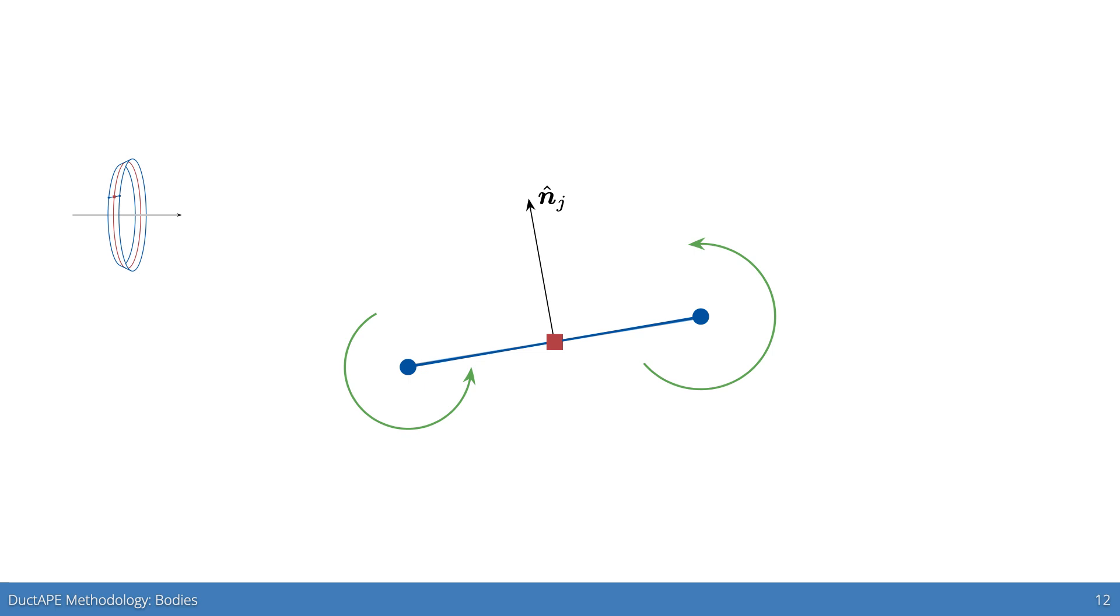By the axisymmetric assumption, we can think of these bands as flat, linearly distributed vortex panels like this, though using vortex ring influences rather than planar vortex influences.